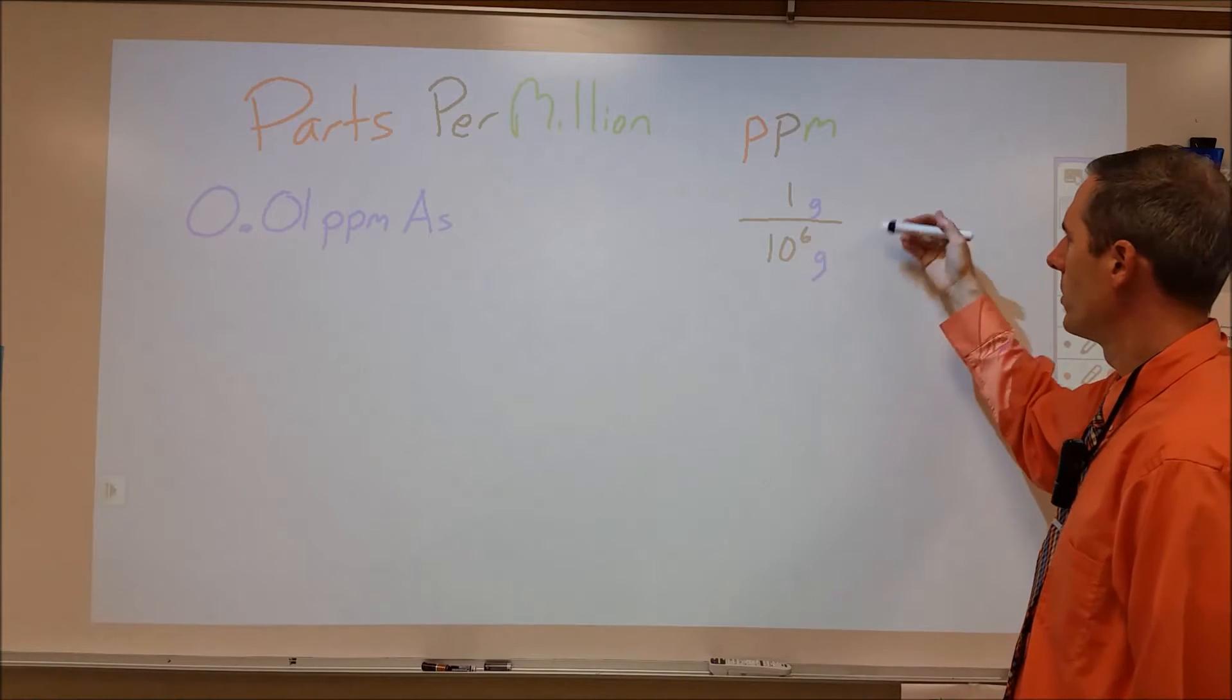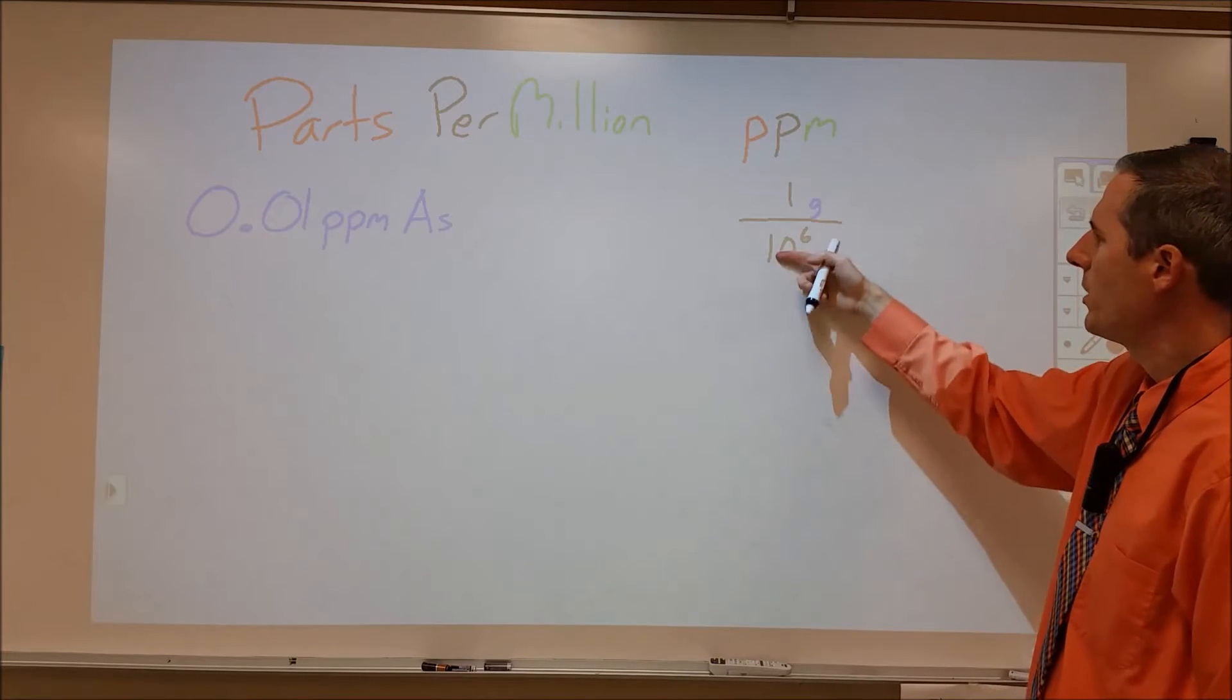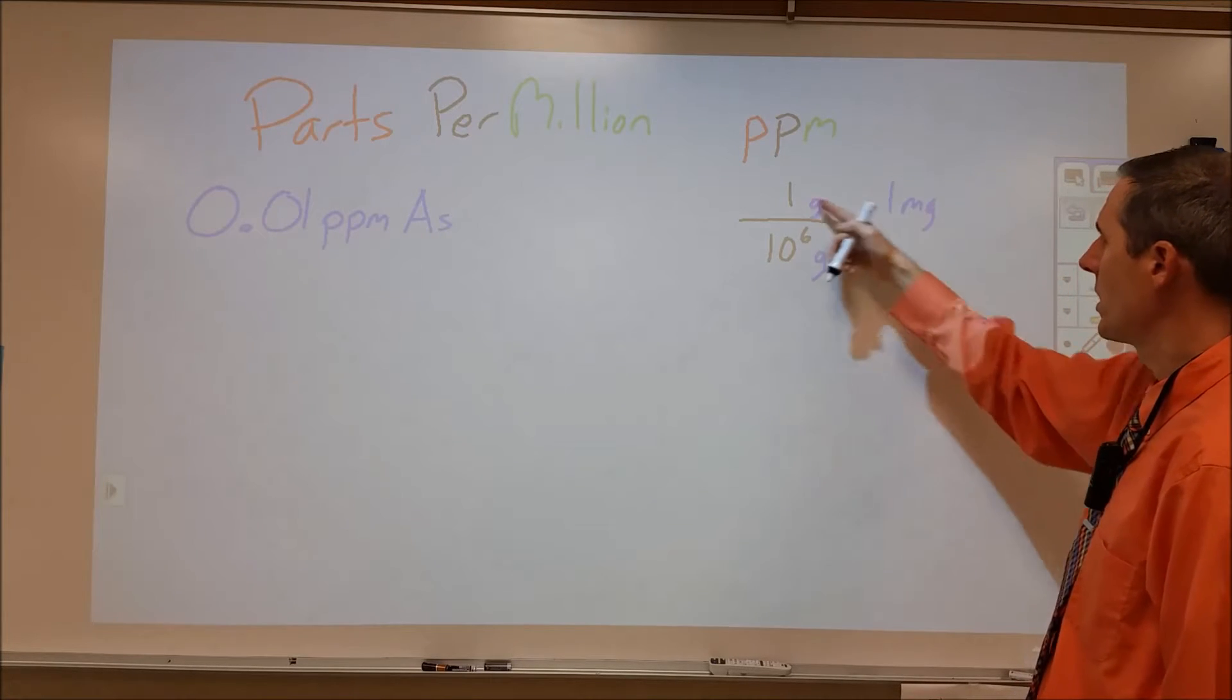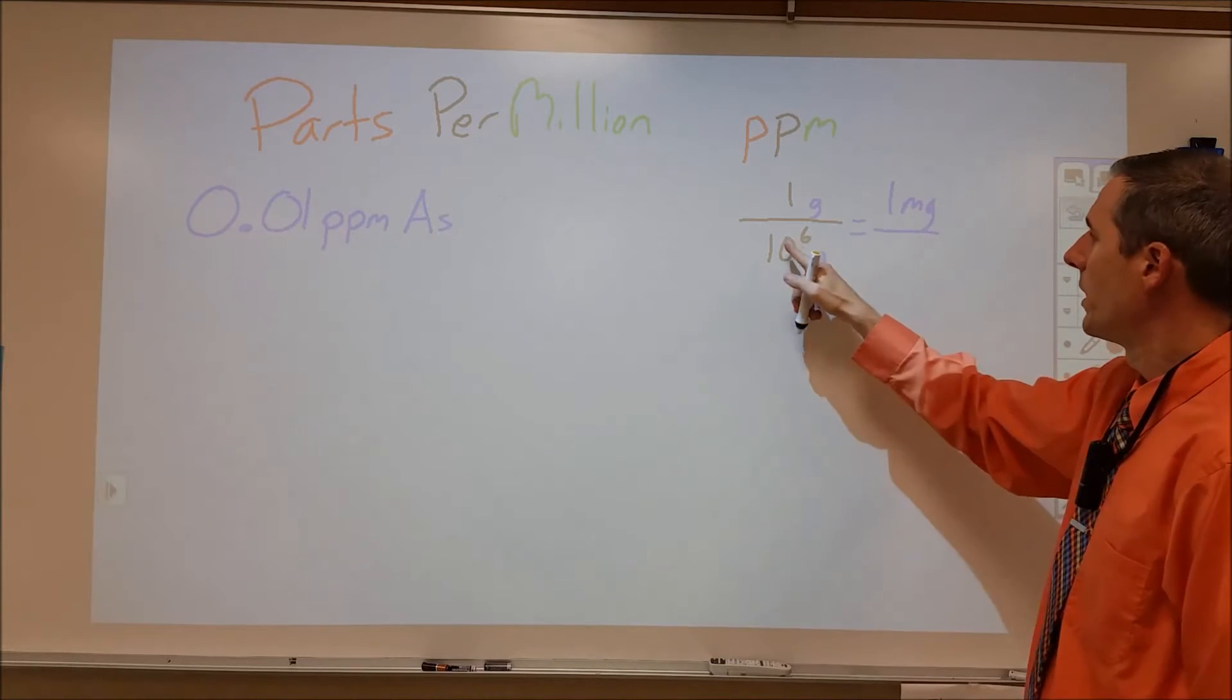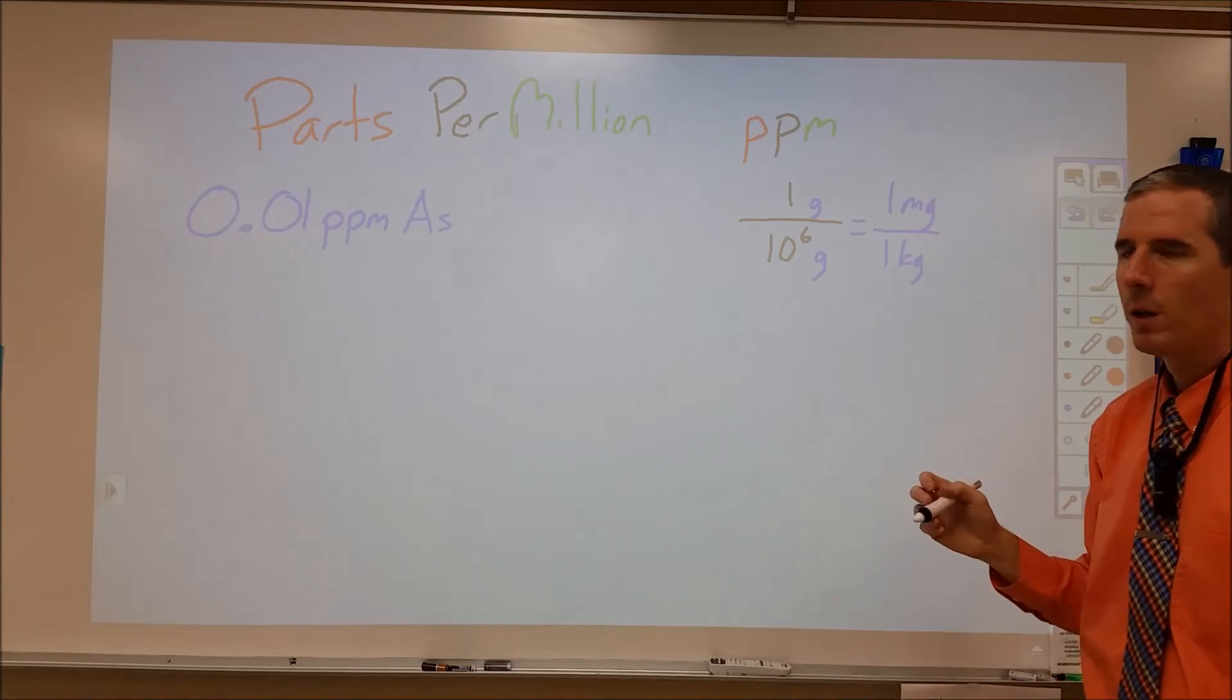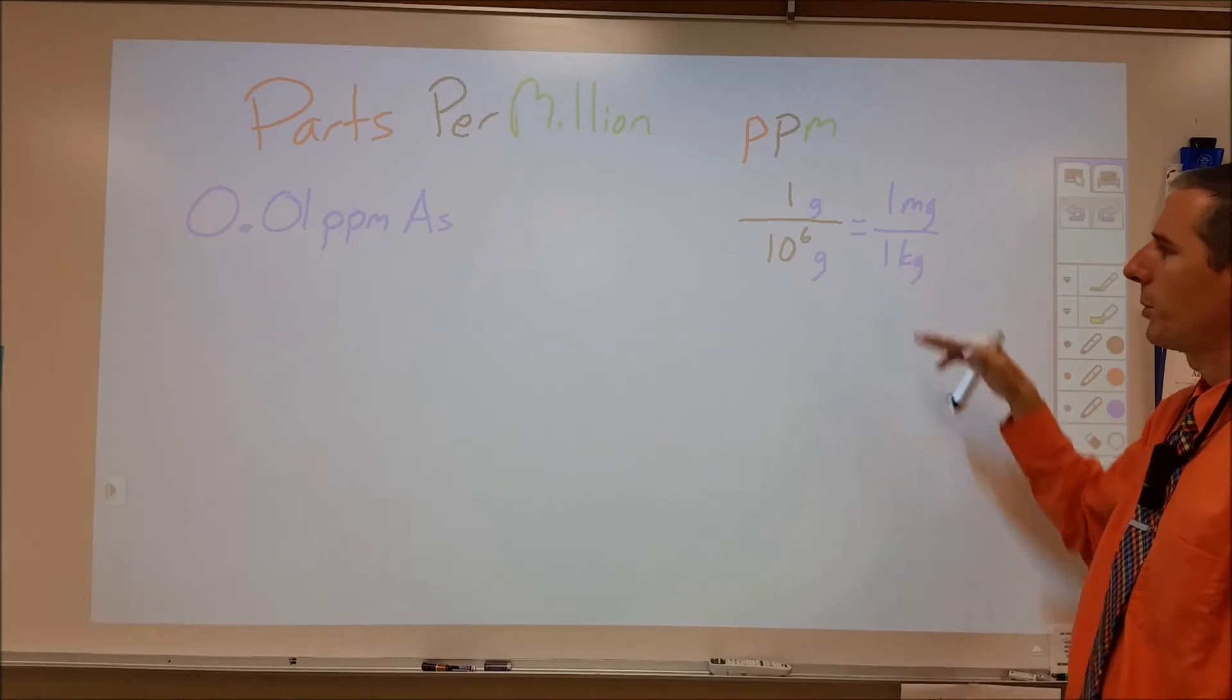That's also kind of difficult to work with, so what we usually do is divide each of these into a thousandth of a unit. We go with one milligram, which is a thousandth of a gram, and then a thousand grams, which is also one kilogram of solution. So we look at how many milligrams we have per kilogram.